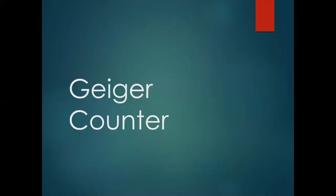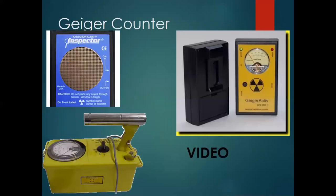Humans cannot detect radiation with their bare skin, so we need to know whether radiation is occurring and how much. That's where a Geiger counter comes in. These are a little bit antiquated, but if we were in class together I'd actually be showing you one that looked just like this. Now they look more like handheld GPS units with a digital display, but the clicking sound is present whether you use the older or newer style ones.